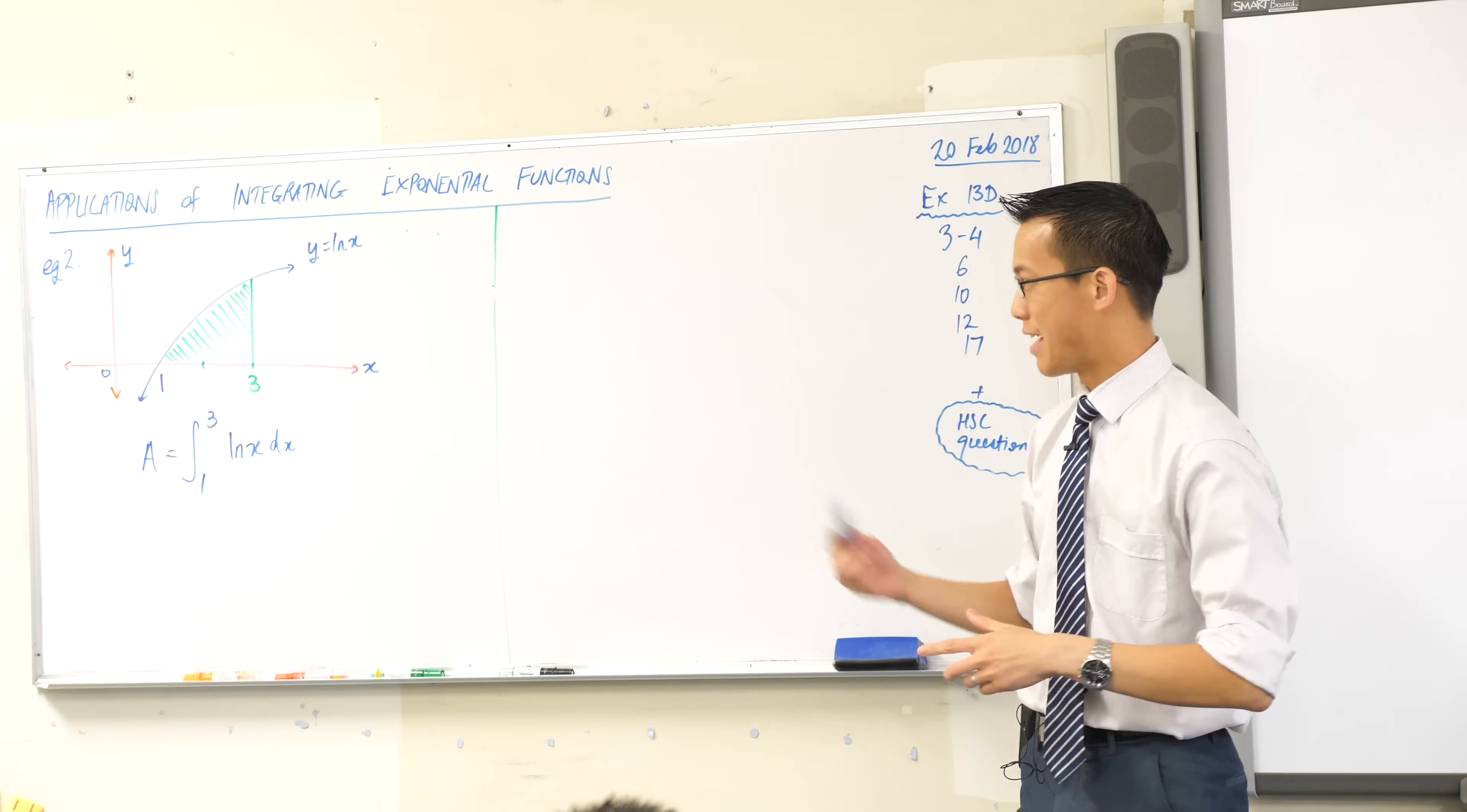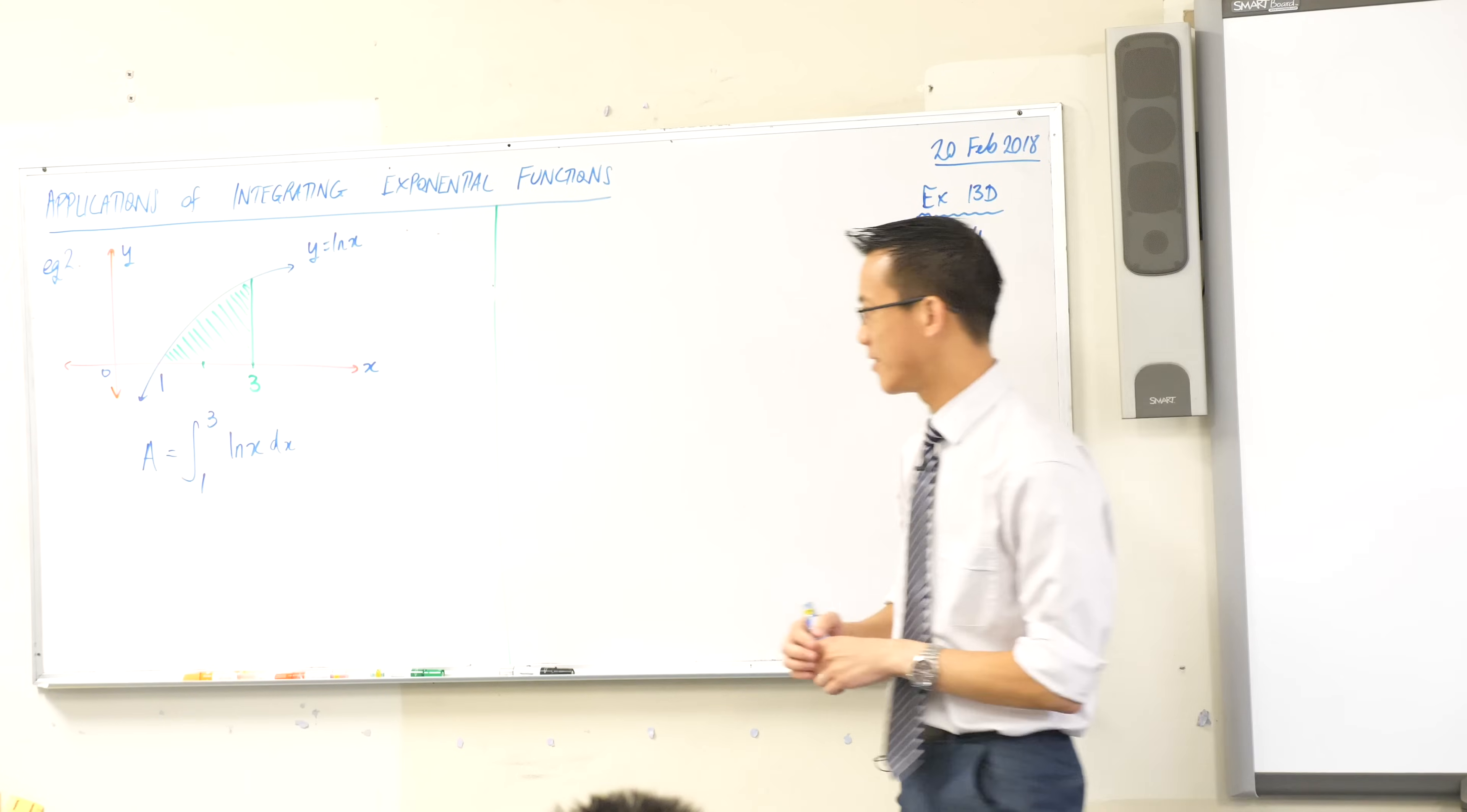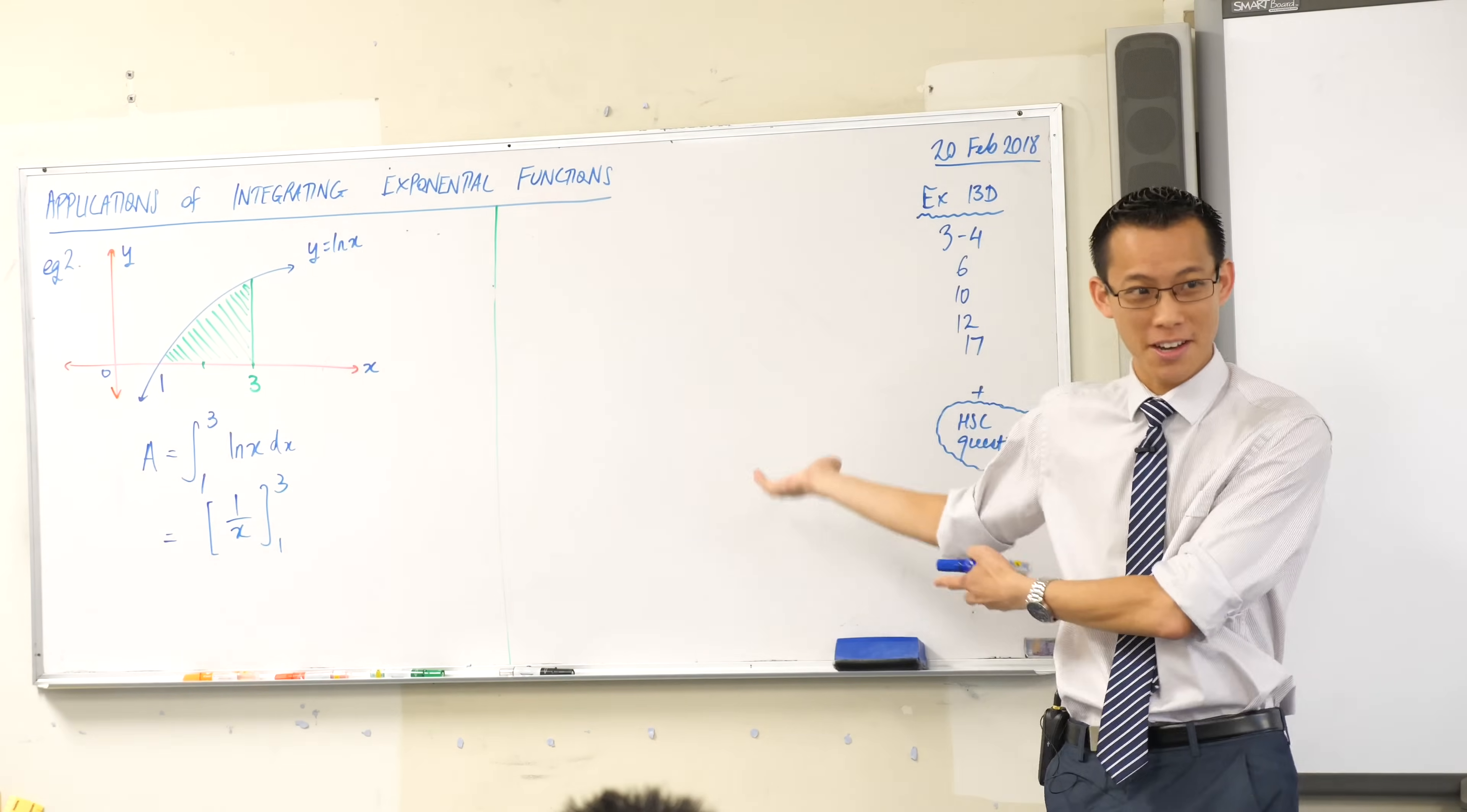That is the integral that would give you the exact area. There's just one teeny problem, which is that we don't know how to integrate logs. It's very tempting like a lot of students will say oh I know what to do with this, I know what happens when you have logs, it's one over x, right? And then they get a really nice simple answer, just happens to be wrong, that's all. What have they done?